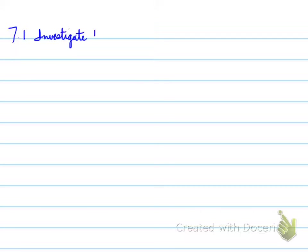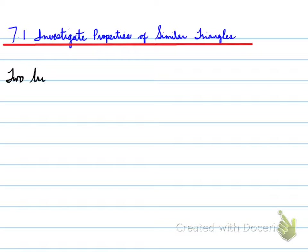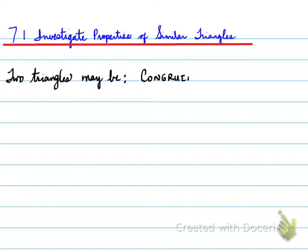7.1, investigating properties of triangles. We're especially going to be looking at similar triangles at the end of this chapter, but we're going to have two parts to this video. We need to understand that two triangles may be identified as either congruent, similar, or neither.